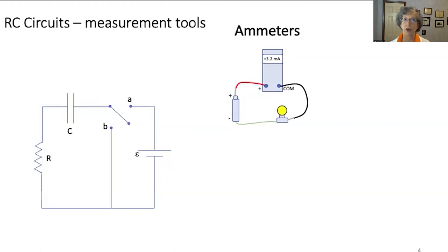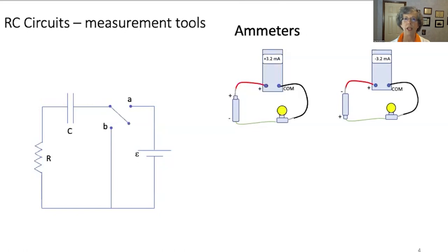The ammeter in this circuit reads positive 3.2 milliamperes. Now this is another circuit that has a negative reading of identical magnitude. What do you see in the arrangement of the circuit components that would account for the difference in sign? Hopefully you notice the battery has opposite polarity in the two circuits. An ammeter has a positive terminal and a negative, or common ground terminal. A red lead is by convention connected to the positive terminal, and a black lead to the negative. We're going to stick to this convention because this will allow us to use red as shorthand for positive, and black as shorthand for negative.